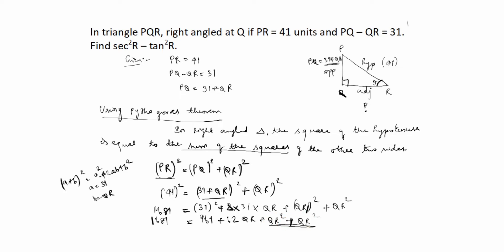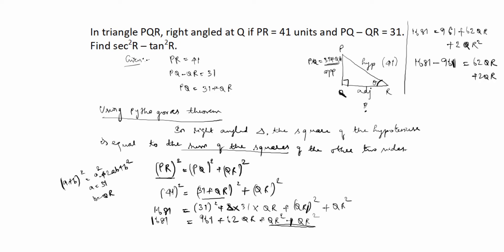So we write: 1681 equals 961 plus 62 QR plus 2 QR square. Numbers should go to one side, so 1681 minus 961 equals 62 QR plus 2 QR square. 1681 minus 961 is 720, so 720 equals 62 QR plus 2 QR square.